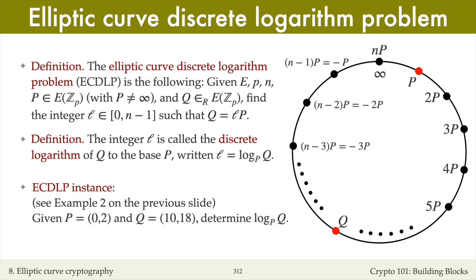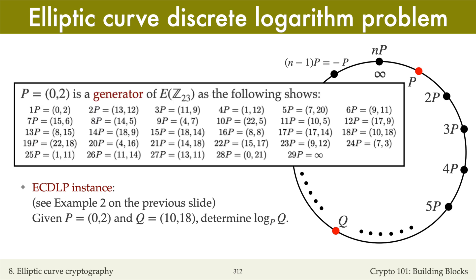We have to find the integer l between 0 and 28 such that Q equals l times P. Of course, here the number of points on the curve is small, namely 29, so I can solve the problem by searching through all multiples of P until I encounter Q. Since Q equals 18P, the logarithm of Q to the base P is 18.